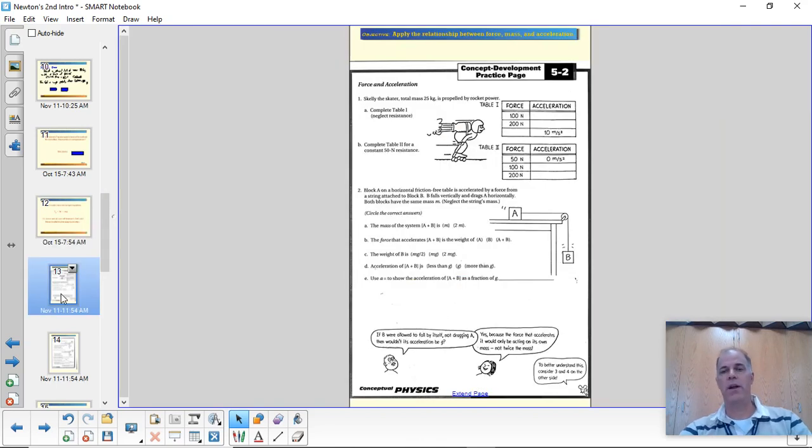Now we have a couple of worksheets here that are attached to the assignment, and you're not going to turn these in, but I want you to work through them and at least get the answers on scratch paper or something like that. This top section here is just practice using the second law, F equals MA, F net equals MA. So the first one, we're assuming no friction, and we just have the force of the rocket accelerating Skelly the Skater. The second one, there is some air resistance or friction or whatever it is, so you have to do a little quick calculation for the net force. This column of force is rocket force, and then you have to take into account the friction to find out the net force, which in this case, when it's 50 newtons of force and 50 newtons of friction, well, that's zero net force, so there's no acceleration. That's just practice.